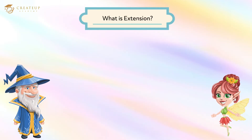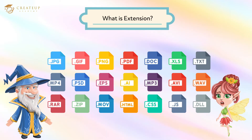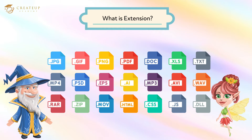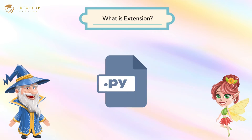What is the extension? There are various types of files on your computer. In order to distinguish the type, the distinguishing symbol at the end of the file name is called an extension. I understand that the extension is a symbol to indicate the type of file. Exactly — for Python, add .py as the extension at the end of the file name.